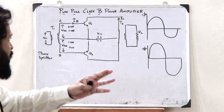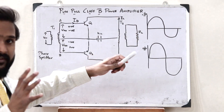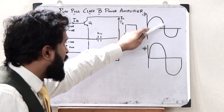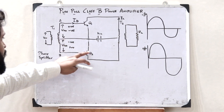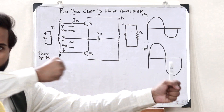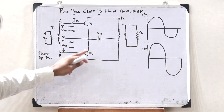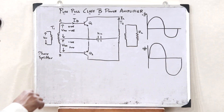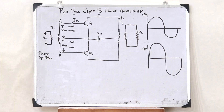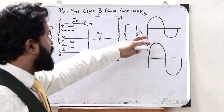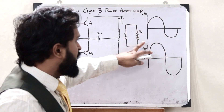This is the simple working of a push-pull class B power amplifier. As the name suggests, in the positive half cycle this transistor is pushed into conduction whereas the other is pulled out of conduction. In the negative half cycle, that transistor is pushed into conduction whereas the first is pulled out of conduction. Because of this, we get an output for the entire input signal.